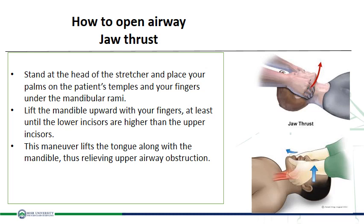طب هفتحه إزاي؟ هفتحه بحاجة اسمها الـ jaw thrust. الـ jaw thrust بيعتمد على إني أقف عند رأس العيان وأفتح الـ airway by pulling the tongue away from the posterior pharyngeal wall من غير ما أحرك الـ cervical spine. هحط palm of the hand على الـ patient's temples — مع تجنب excessive pressure على الـ eyes — وبصوابعي وراء angle of the mandible، أشد الـ mandible لفوق ناحية الـ ceiling.